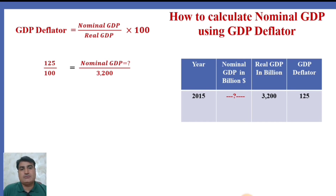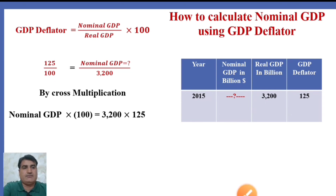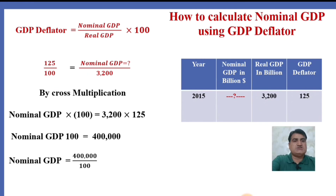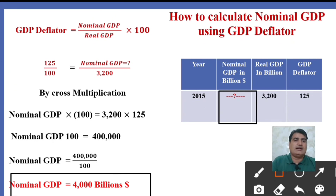$125 over $100 means the prices have risen from the base year. The nominal GDP is equal to what? When the real GDP is $3200, by cross multiplication, nominal GDP multiplied by $100 equals $3200 multiplied by $125. So the nominal GDP is equal to $4000 billion — that is the missing figure. Using real GDP, we calculated the nominal GDP with the help of GDP Deflator.